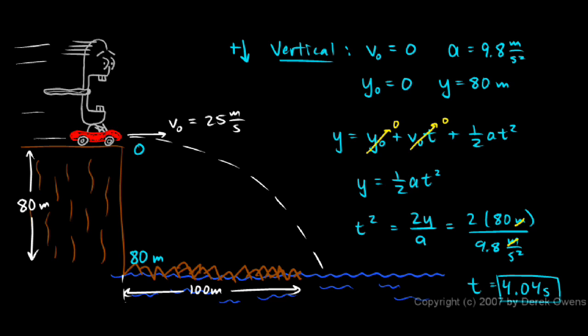The fact that he's moving horizontally doesn't affect the time that it takes him to fall 80 meters. The only thing that affects the time from the fall is the distance that he falls and the acceleration due to gravity. Those are the two things. You can see them right there: the distance and the acceleration due to gravity. Those are the two things that figured into my calculation of the time.